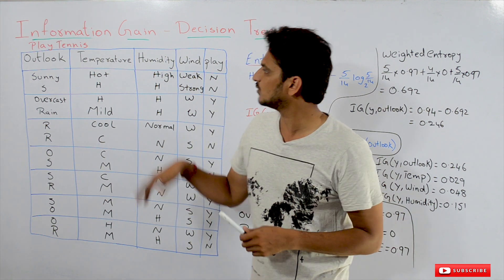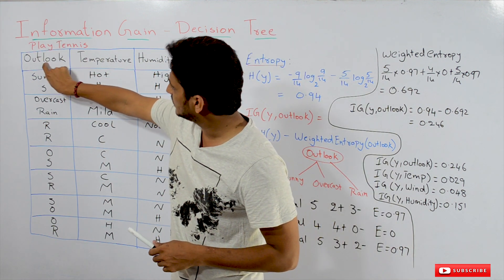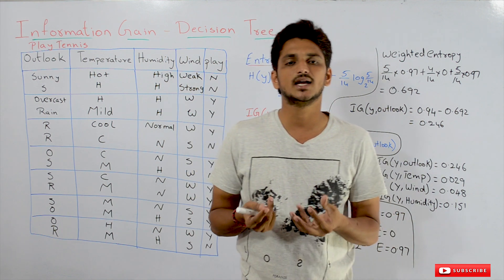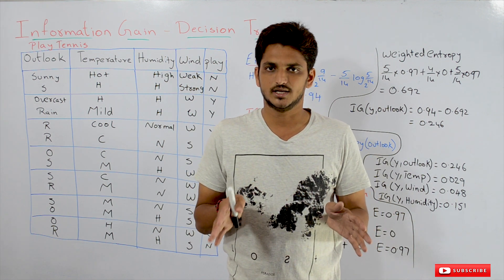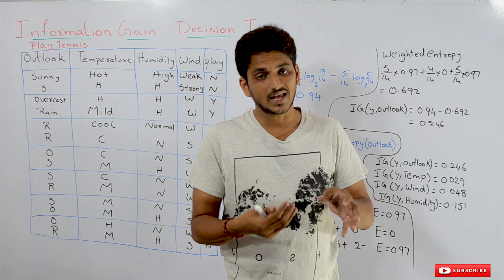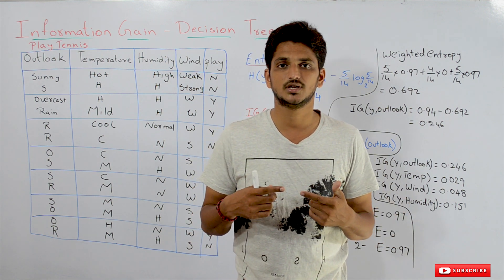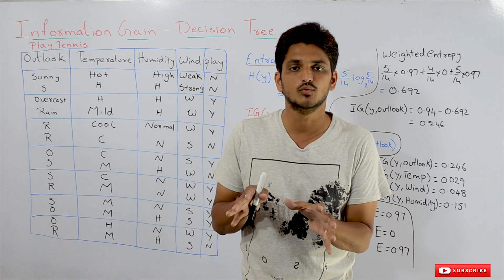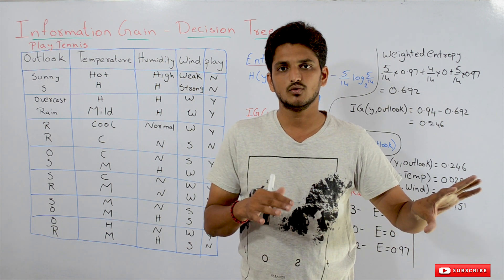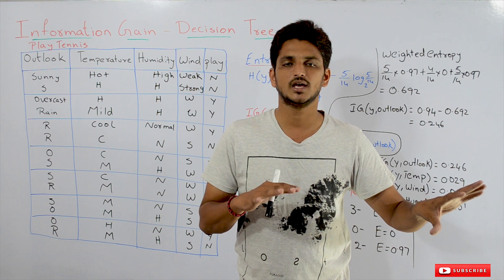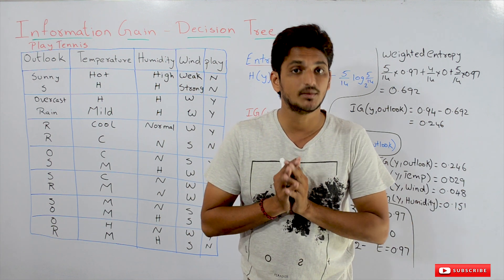In our example, outlook is the best column, so we select it as the root node. Then we have to split and extend the decision tree. How to construct the decision tree using information gain we will discuss in our next class. Here, we understood what information gain is and how it helps in identifying the best column.